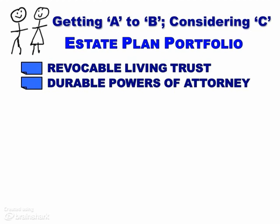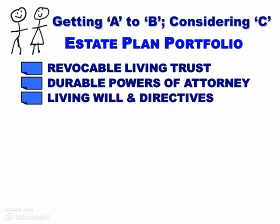Durable powers of attorney allow you to select someone to act on your behalf to make financial decisions and medical decisions if a condition would occur where you cannot do this. Living will and directives allows you to state your choice about the continuation of life support systems if you are in a condition of being in a comatose state.